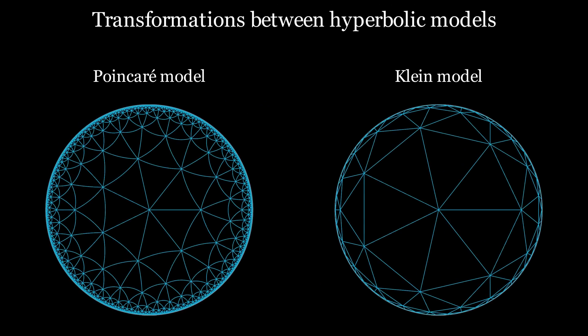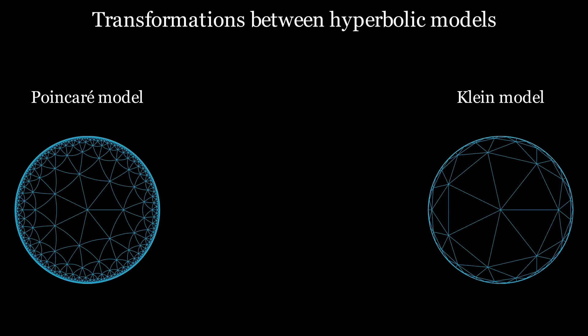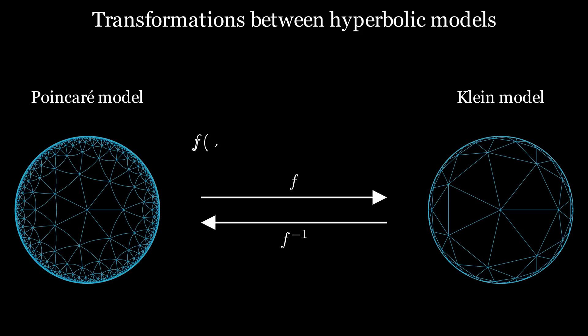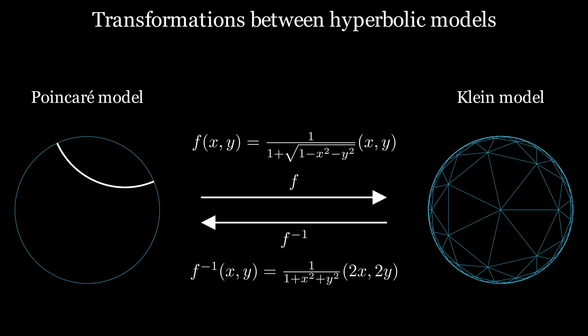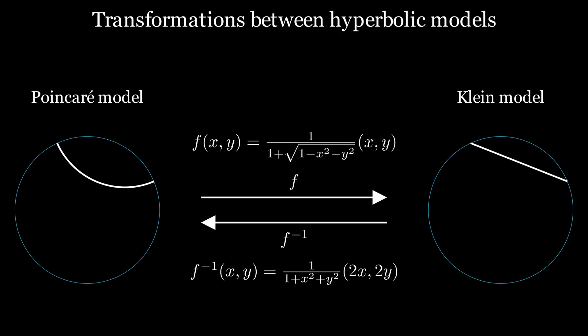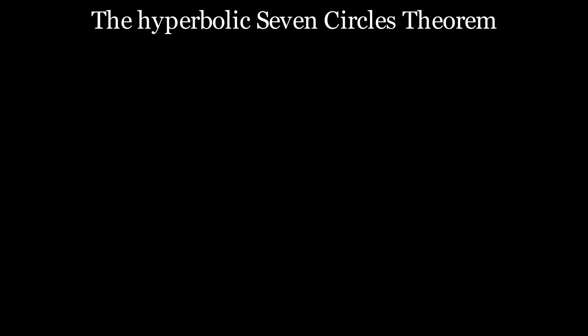Since both models represent the same space, it is natural that there are mappings that identify the points of the models with each other. We call them F and F inverse. The formulas for these maps are fairly simple. With F and F inverse, we can now transfer objects from one model to the other, specifically geodesics. Since the maps act point-wise, intersections between geodesics are preserved. This helps us rephrase the seven circles theorem.